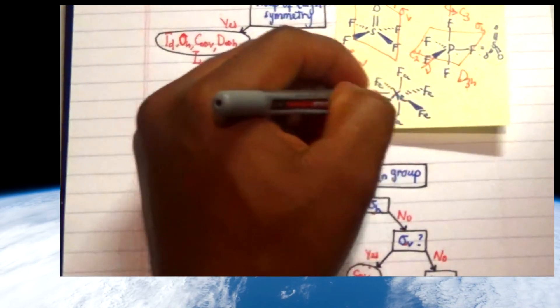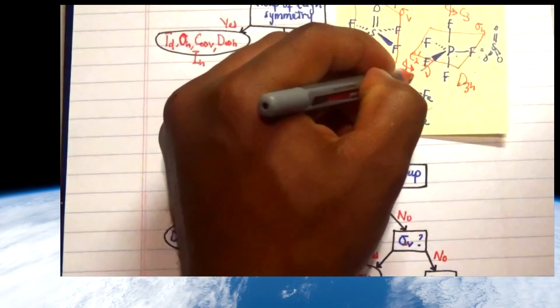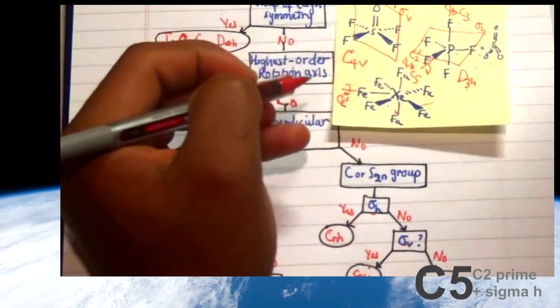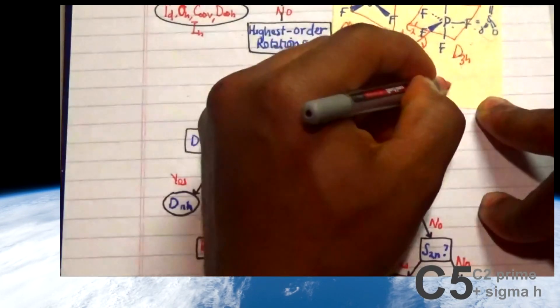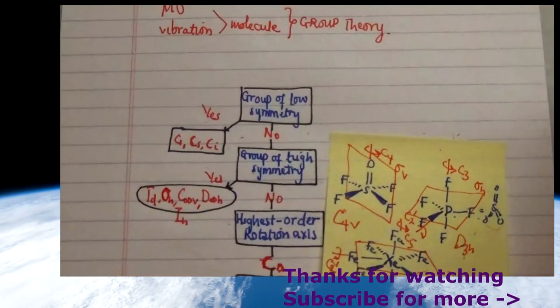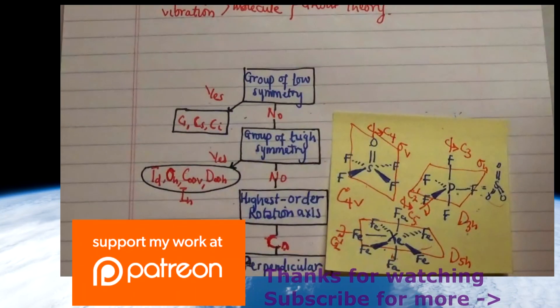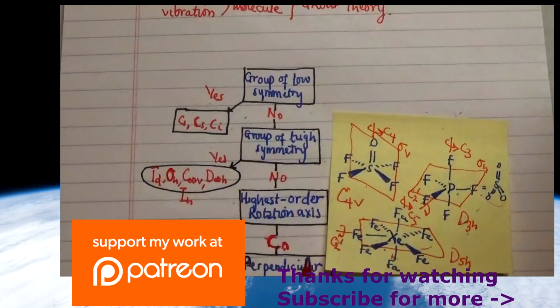Finally, the last molecule has axial groups that are the same functional group, while the equatorial groups are the same but different from the axial ones. It has a C5 principal axis and also has C2' axes. With a sigma-h plane perpendicular to C5, this molecule falls into the DNH category where N equals 5, making it D5H. Thanks for watching and for your support — subscribe and see you in the next video!